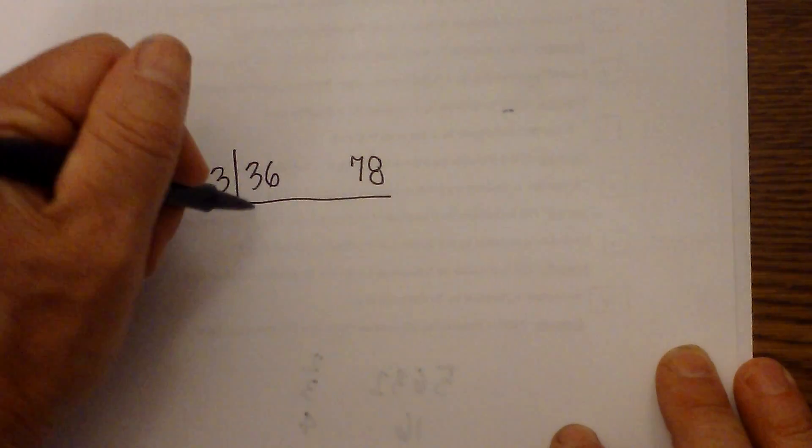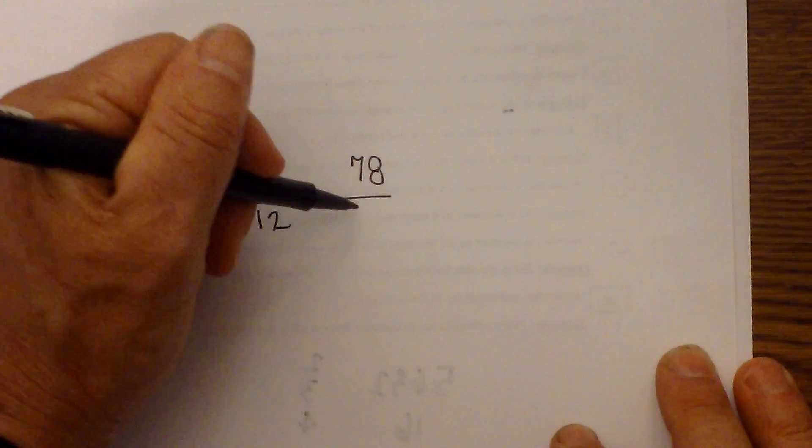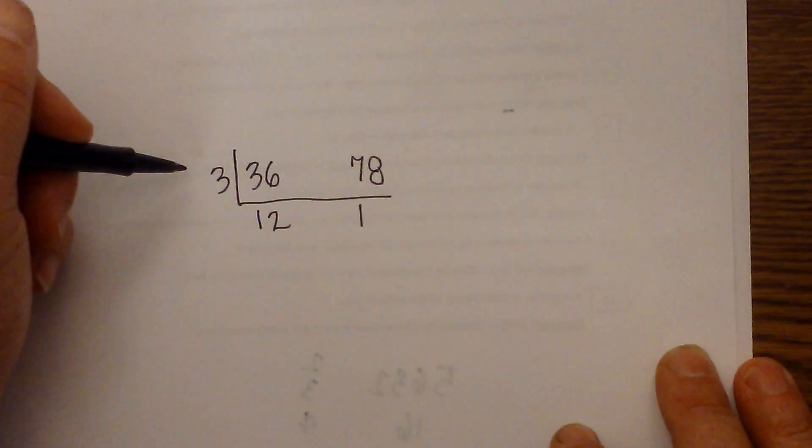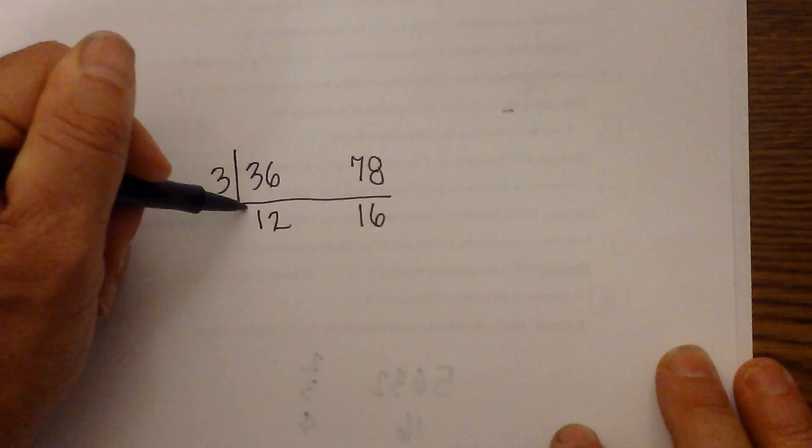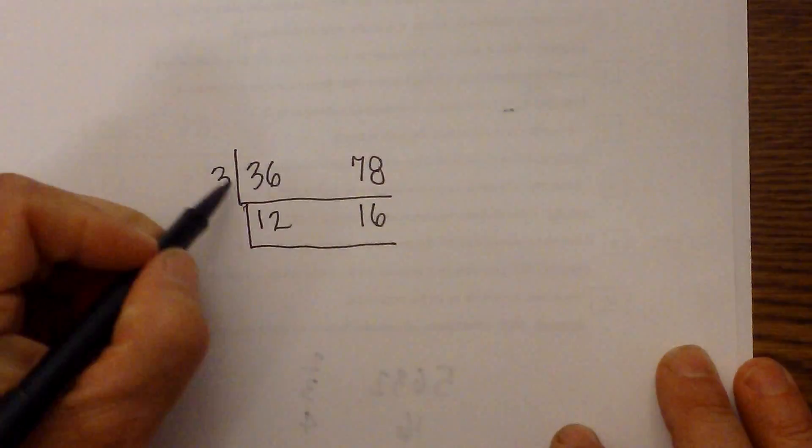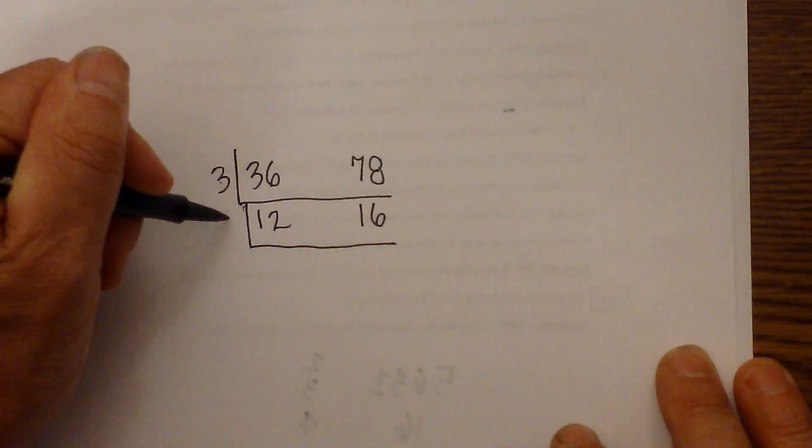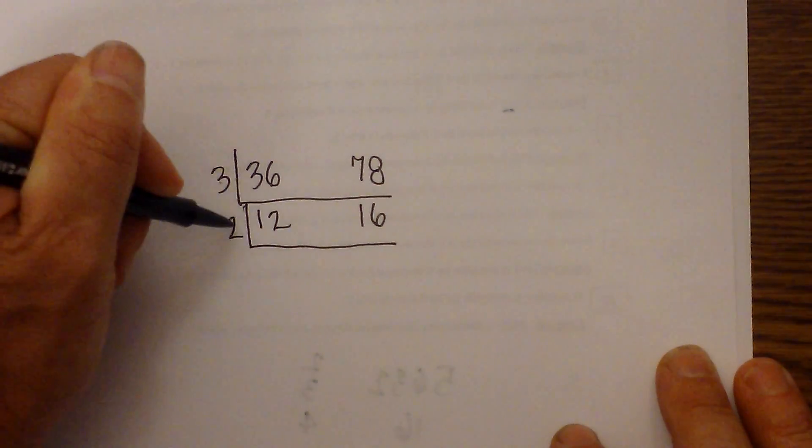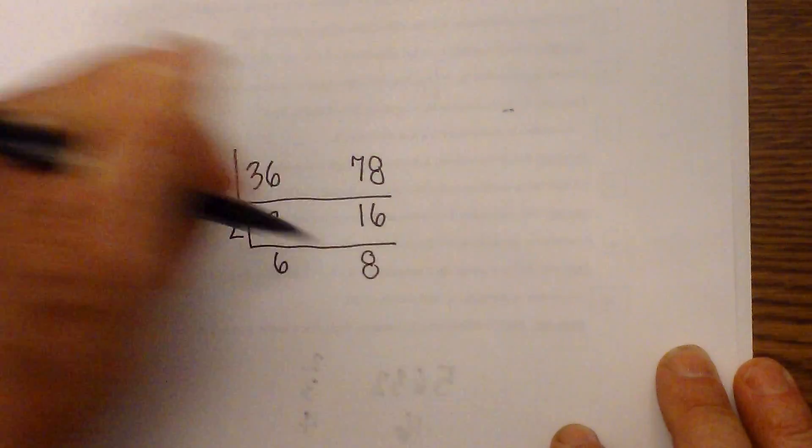So 3 will go into 36 2 times. And 3 will go into 78 1 with 1 left over. And then we have a 16, so I'll draw a line. So 3 goes into 78 16 times. And now I'll just use a 2 here. Because I know 2 goes into 12 6 times and 16 8 times.